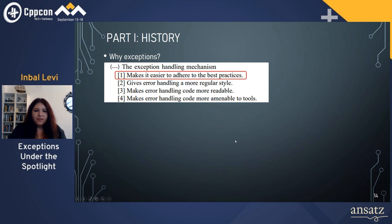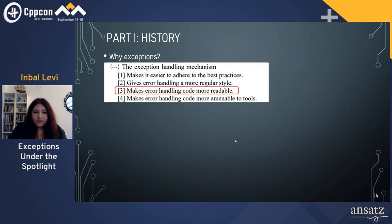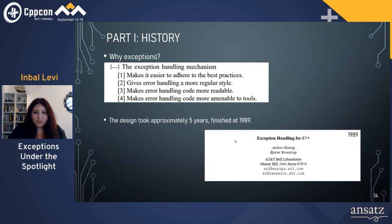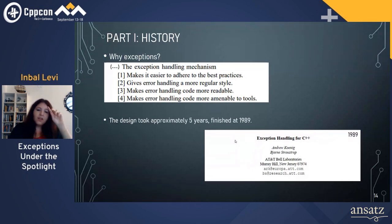Why exceptions? Exceptions make it easier to adhere to best practices. They give error handling a more regular style, make error handling code more readable, and make error handling code more amenable to tools. This is actually a quote from the first paper that suggested exceptions to the C++ standard. The design of the exception mechanism took approximately five years, finishing in 1988 — very early.